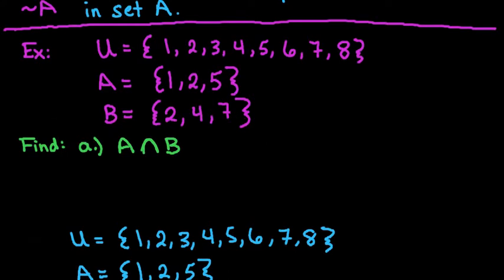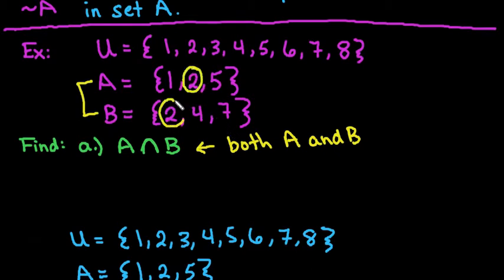So for the first one, we're looking at A and B, which means that it's in both A and B. So we're looking for all values in these two sets that are the same. As you can see, the only thing that is the same in both of them is 2. So the answer to this one, A ∩ B, is going to be the set containing the value 2. If there was nothing in common, you would just put the empty set, but this one does have something in common.